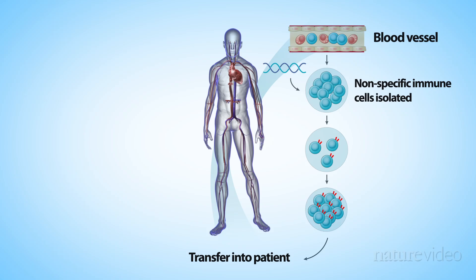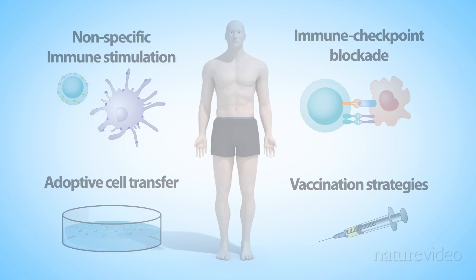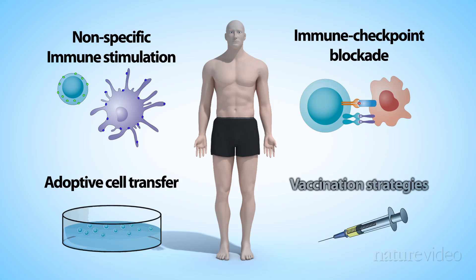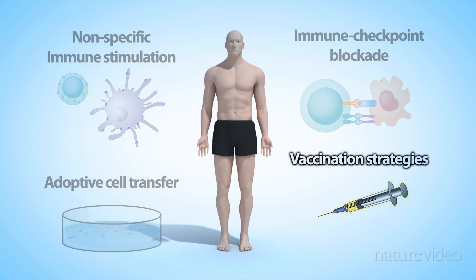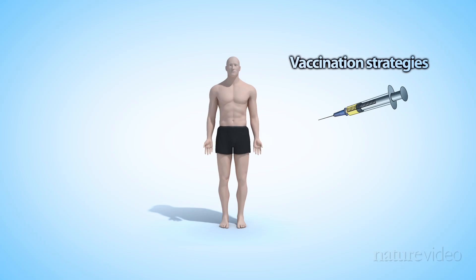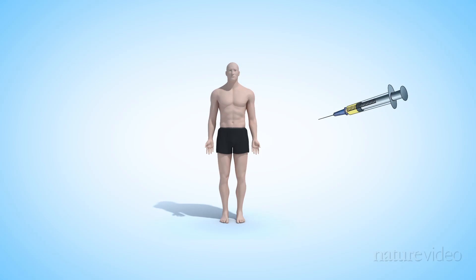At the moment, this approach is experimental. The fourth strategy uses vaccinations. Unlike the BCG vaccine that we mentioned earlier, and which targets the immune system in a general way, these vaccines are used to direct immune cells very specifically to the cancer tissue.